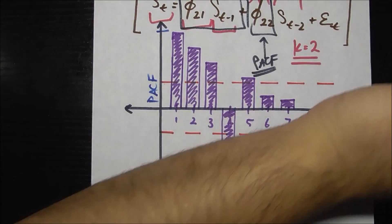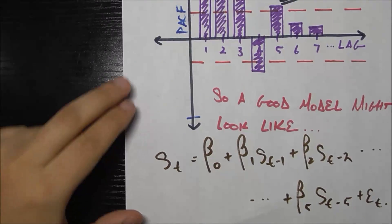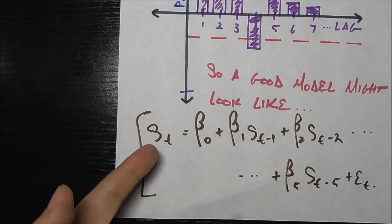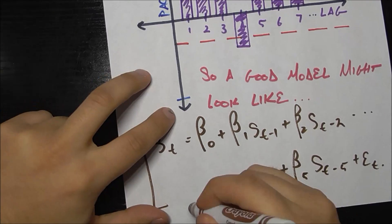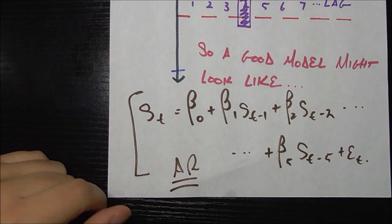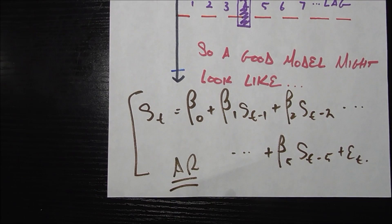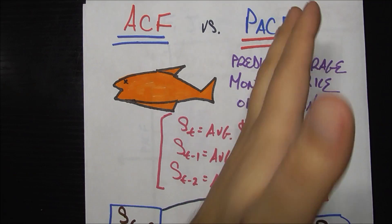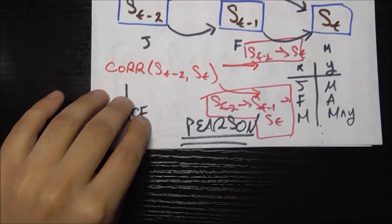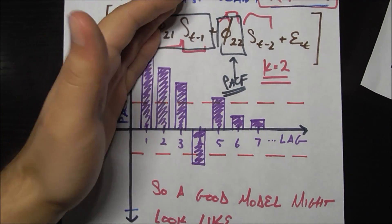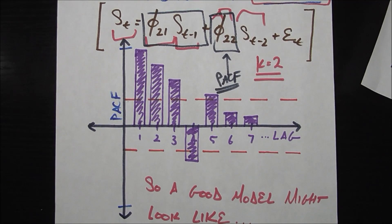You might wonder why we didn't draw an ACF plot — that's useful for a different type of model, which we'll cover in the future. As a teaser: this type of model, where you predict something based on past values of that same thing, is called an AR or autoregressive model — 'auto' because it's based on values of itself in the past. That wraps up the fundamental difference between autocorrelation and partial autocorrelation, and how to find each one.